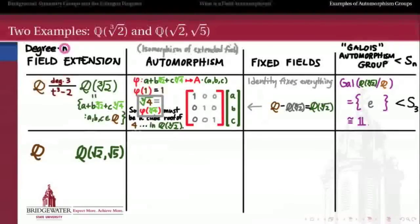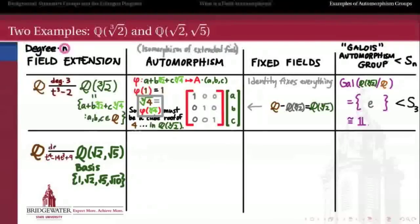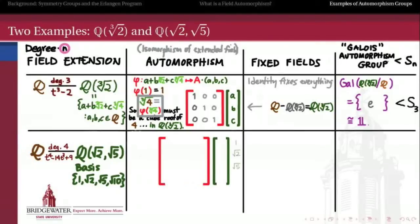Now consider the composite extension Q(√2, √5). An obvious basis is {1, √2, √5, √10}. The minimal polynomial for this extension is t⁴ − 14t² + 9 — I'll leave you to check that — making this a degree 4 extension. For a matrix with respect to this basis, since phi must fix the rationals, the first column has to be (1, 0, 0, 0).